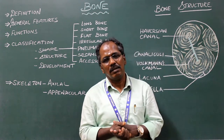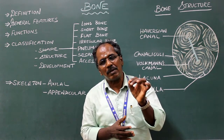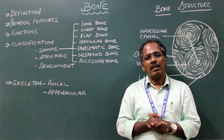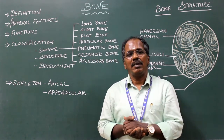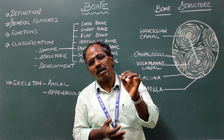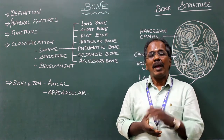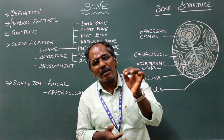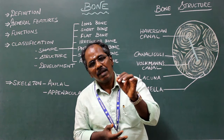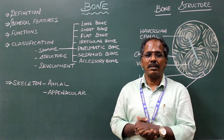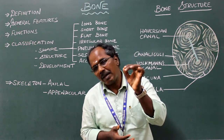Osteocytes are mature bone cells present in a space known as lacuna. They are derived from osteoblasts. They secrete a protein called sclerostin. Increased secretion of sclerostin inhibits the activity of osteoblasts and stimulates the activity of osteoclasts.